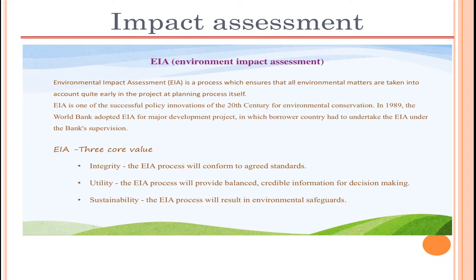Environmental Impact Assessment (EIA) is a process that ensures all environmental matters are taken into account early in a project's planning process. EIA is one of the successful policies of the 20th century for environmental conservation, and in 1989 the World Bank adopted EIA for major development projects. It has three core values: integrity, utility, and sustainability. This is provided for informational purposes and may not appear in exams.